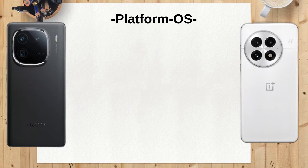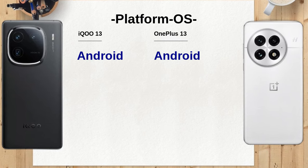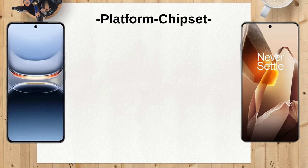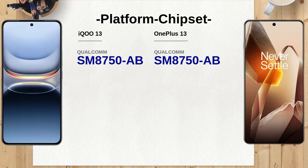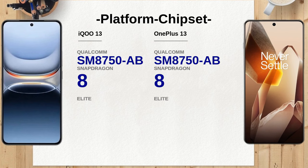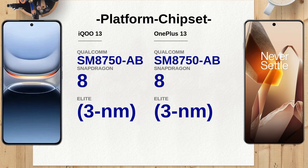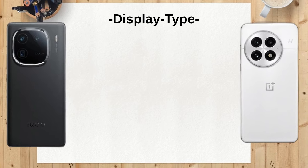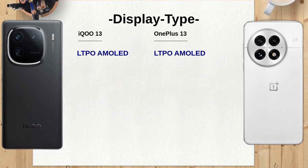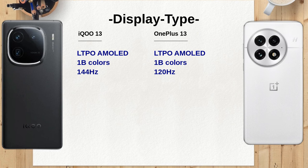Both devices are powered by the Qualcomm SM8750AB Snapdragon 8 Elite chipset, ensuring top-tier performance. Users can expect smooth operation and responsiveness from either model, making them suitable for demanding applications and gaming. The iQO13 has a slightly larger battery capacity at 6,150 mAh compared to the OnePlus 13's 6,000 mAh, which could translate to longer usage times for heavy users who need their device to last throughout the day.